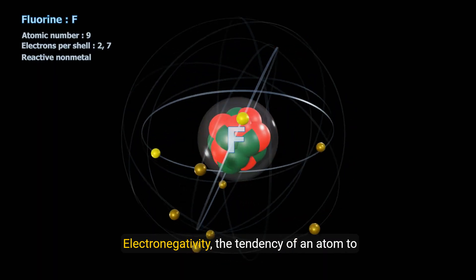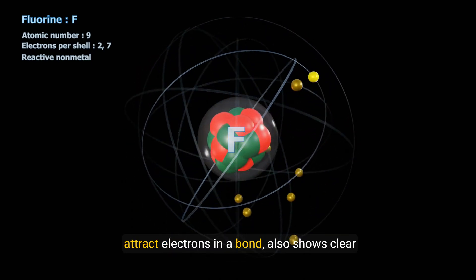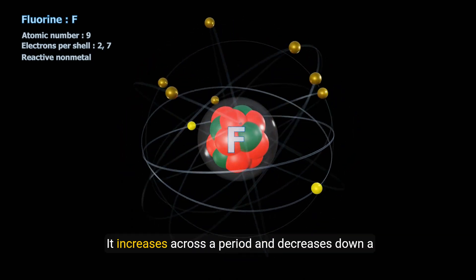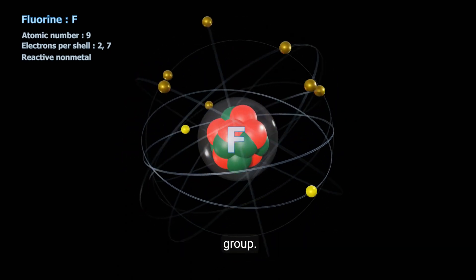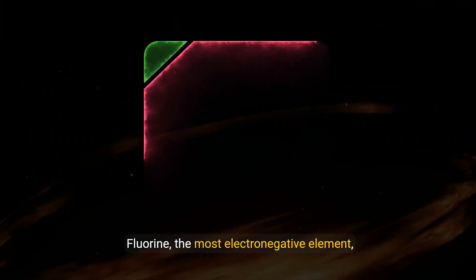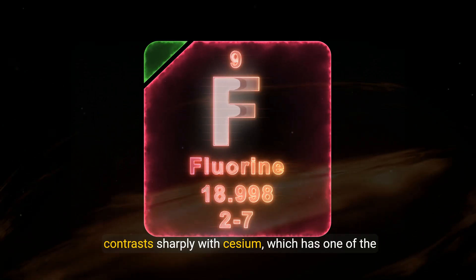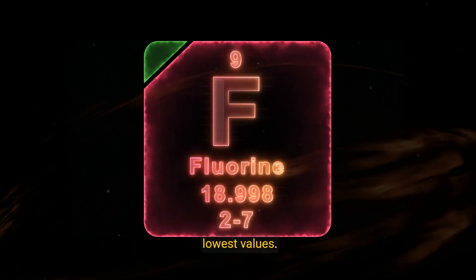Electronegativity, the tendency of an atom to attract electrons in a bond, also shows clear trends. It increases across a period and decreases down a group. Fluorine, the most electronegative element, contrasts sharply with cesium, which has one of the lowest values.